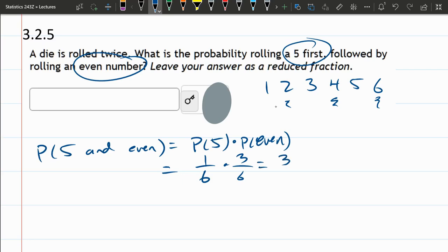You multiply these, we have 3 out of 36, which reduces to 1/12 as a reduced fraction.